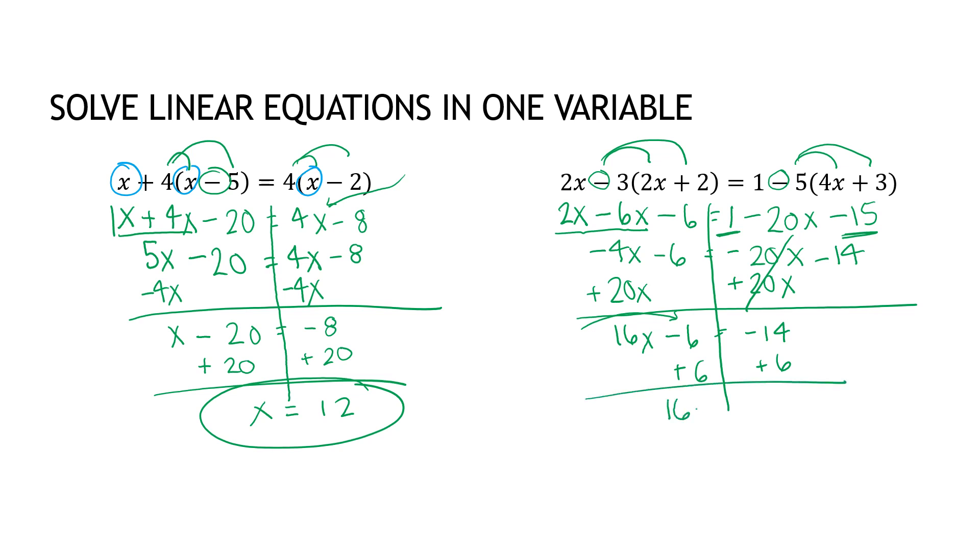Now I've got 16x and negative 8. How do I undo 16 that's being multiplied by x? I divide by 16. My final answer turns into negative 8 over 16, which is negative 1 half, or as a decimal, negative 0.5.